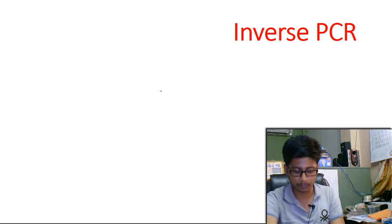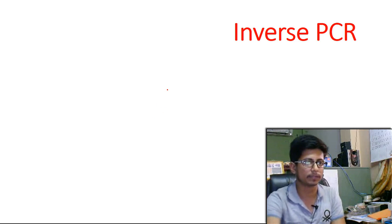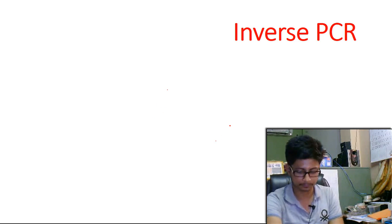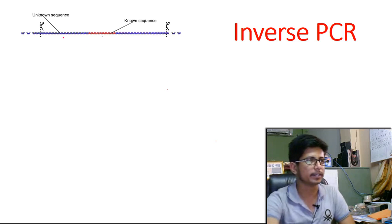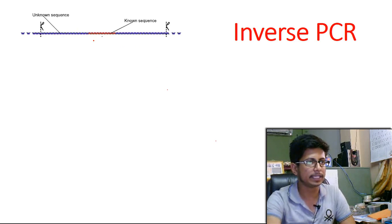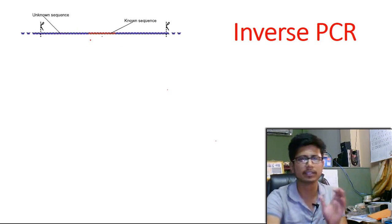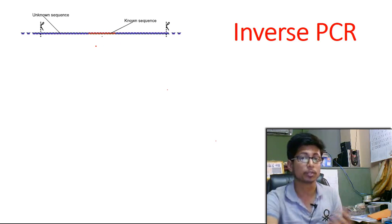Now for this process to work we need to know at least one segment of the whole part of the DNA for this to work. Let's say here this is the complete fragment of the DNA and among this DNA there are segments that we know, some part of the DNA sequence we know, some part we don't know.